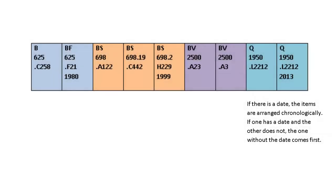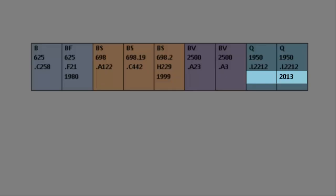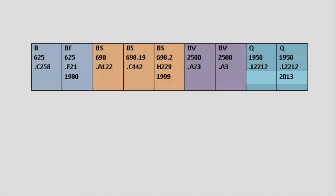Finally, if two call numbers are exactly the same and one has a date and the other does not, the one with no date comes before the one with a date. The call numbers here show how books would be arranged according to call number on the shelves according to LC classification.